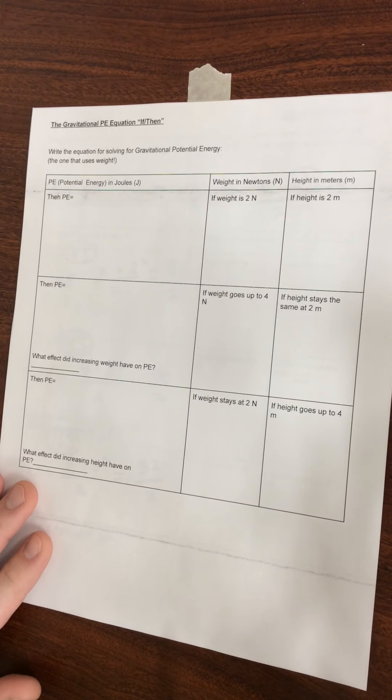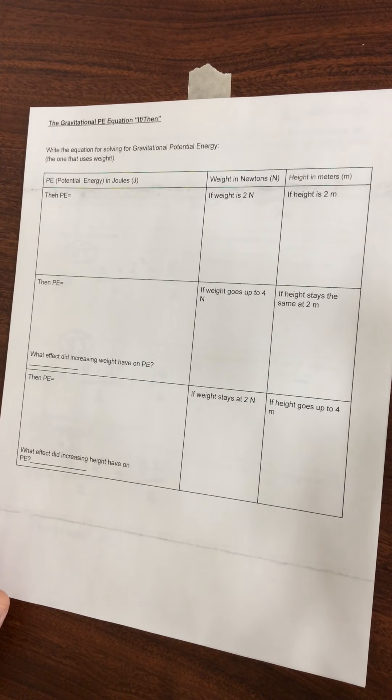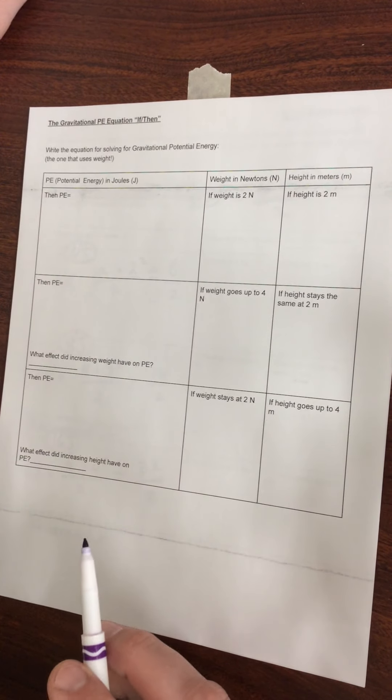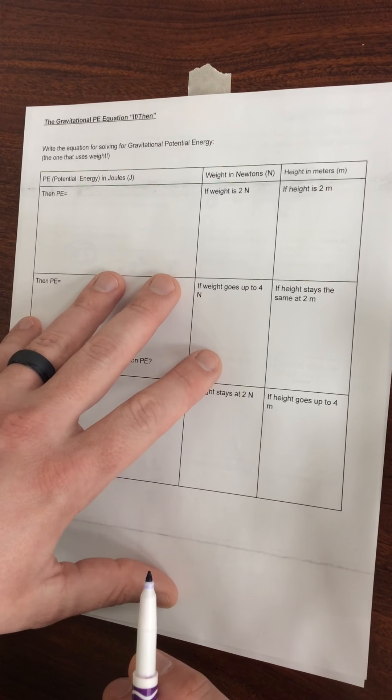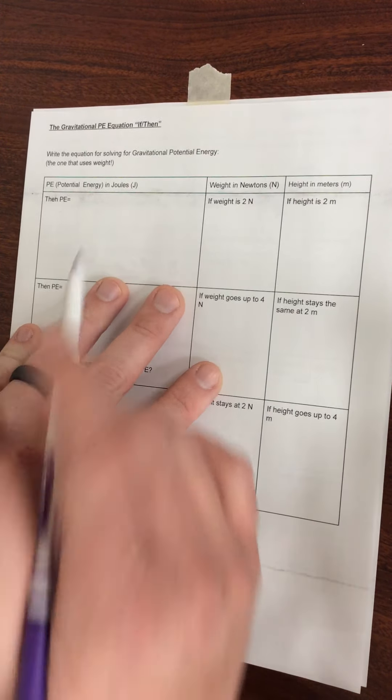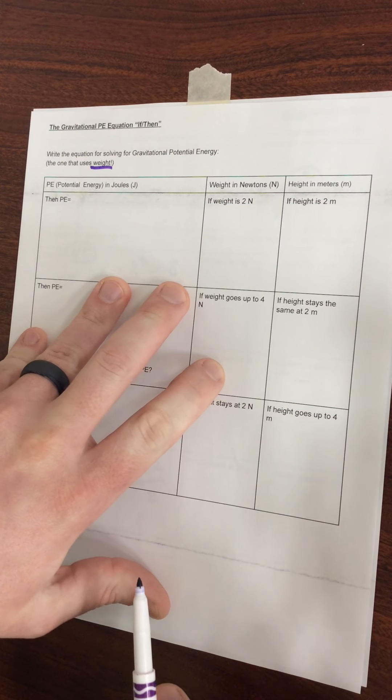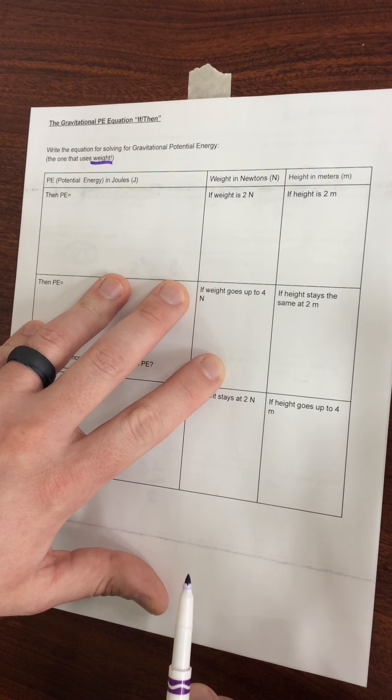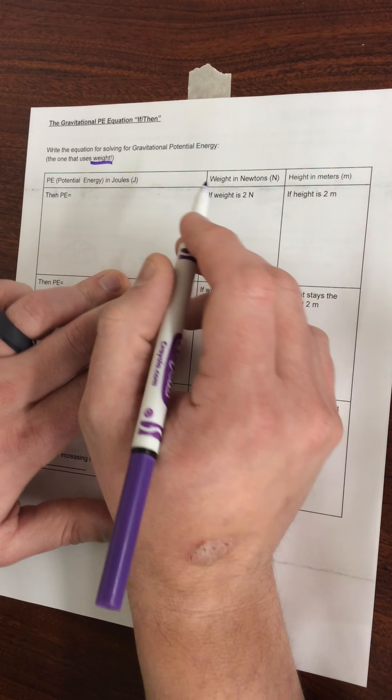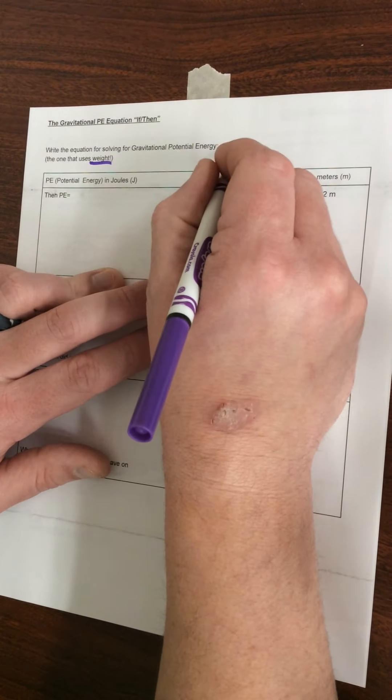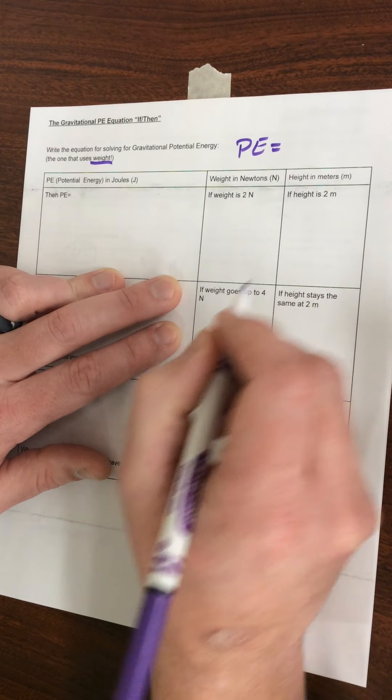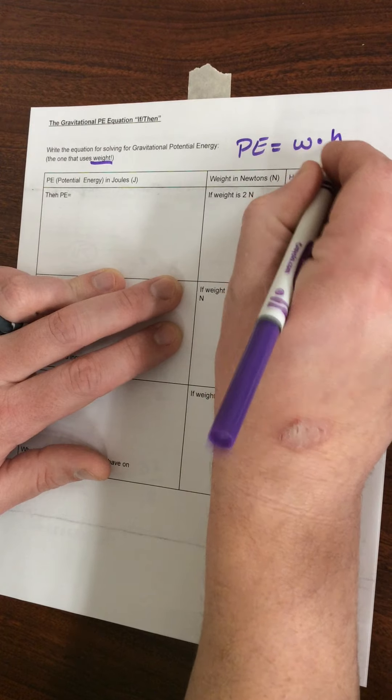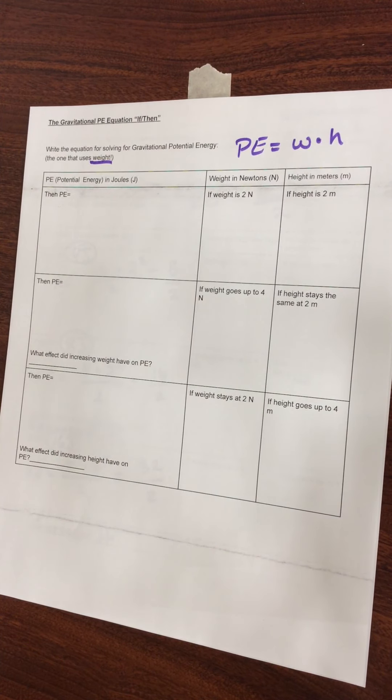We're going to take a look at gravitational potential energy now. With potential energy, we are not going to have a velocity factor. Velocity is motion, motion goes with kinetic energy. So what we're going to look at here is two different gravitational potential energy equations. This one uses weight. Weight and mass are not the same thing. Don't get them confused. The equation for solving gravitational potential energy using weight is PE equals weight times height.